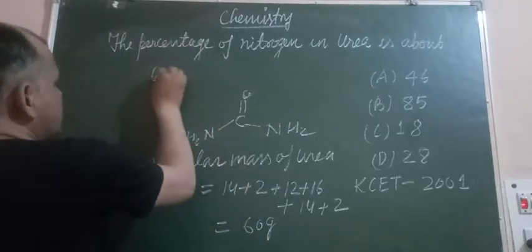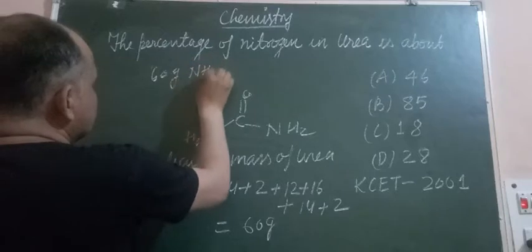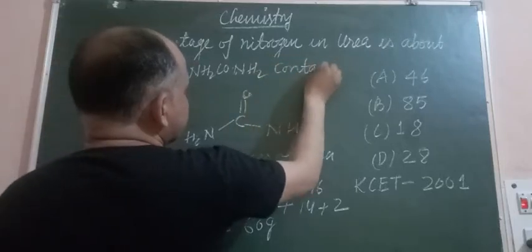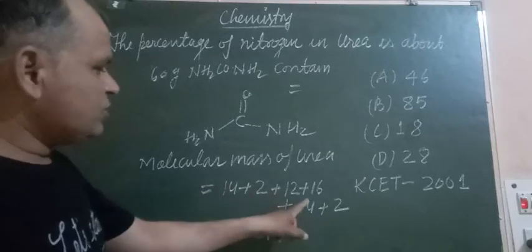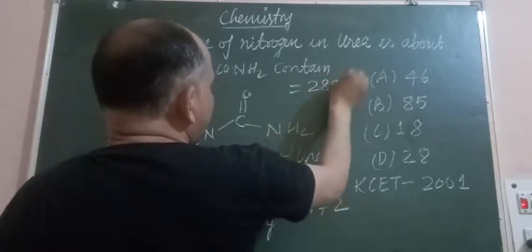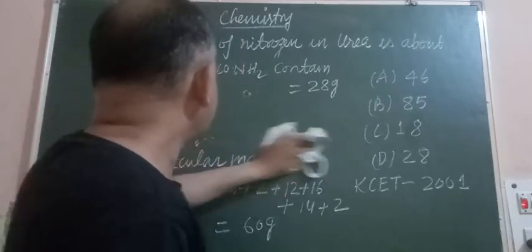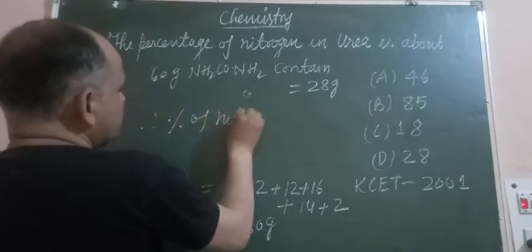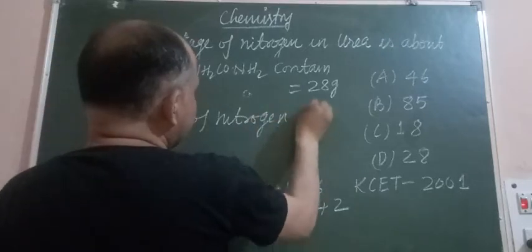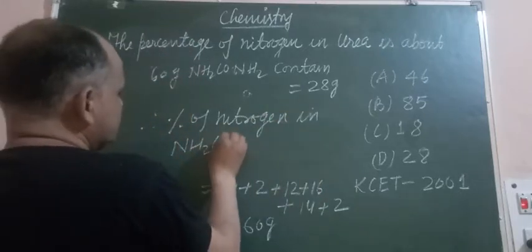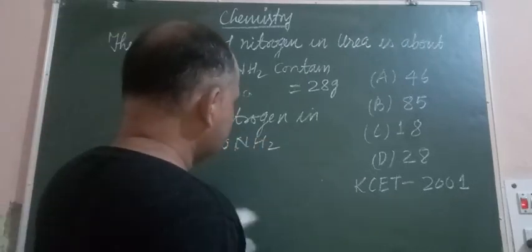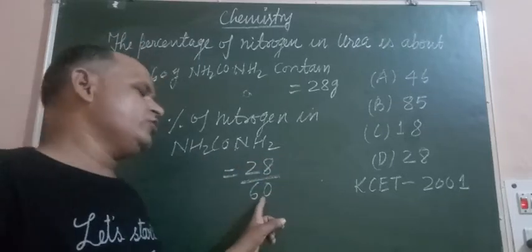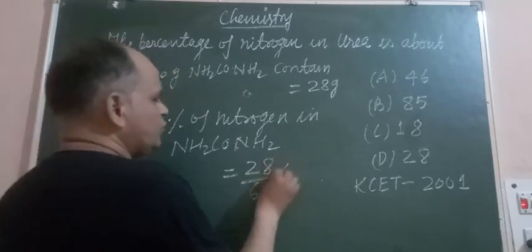So 60 grams of NH₂CONH₂ contains 14 plus 14, so 28 grams of nitrogen. Therefore, the percentage of nitrogen in urea equals the amount of nitrogen divided by the total molecular weight of NH₂CONH₂, multiplied by 100.